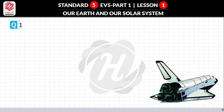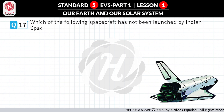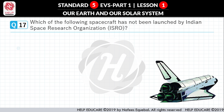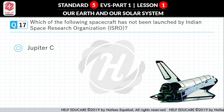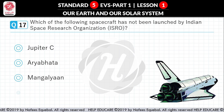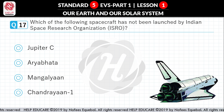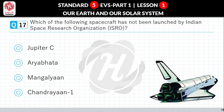Question No. 17: Which of the following spacecraft has not been launched by ISRO? First option: Jupiter. Second option: Aryabhata. Third option: Mangalyan. Fourth option: Chandrayaan 1. Correct answer is Jupiter.